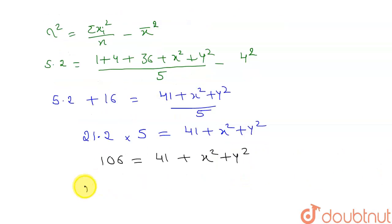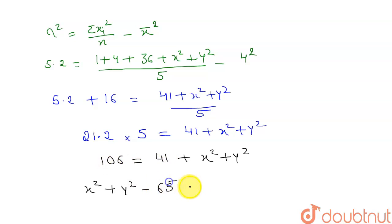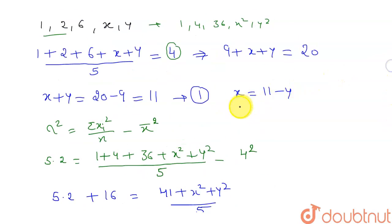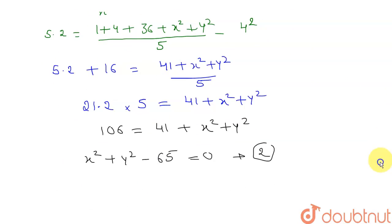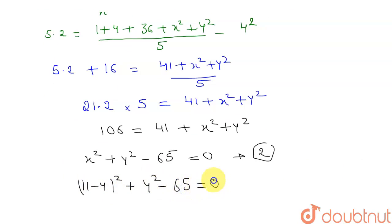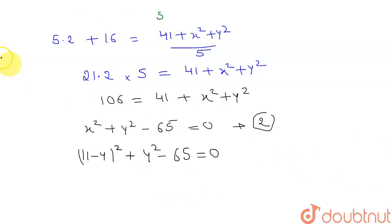From here, x squared plus y squared equals 106 minus 41, which equals 65. Let this be my second equation. Now I substitute the value of x from the first equation, which is eleven minus y. So: eleven minus y, whole squared, plus y squared equals 65.